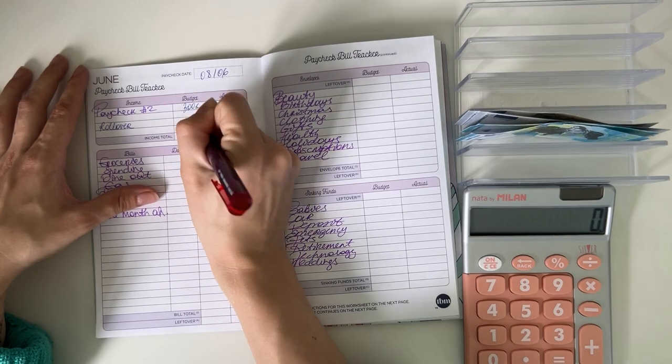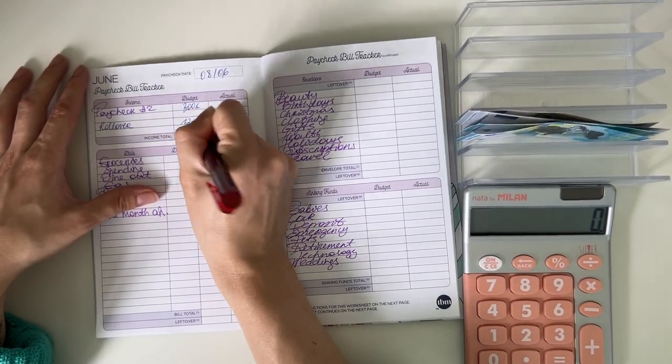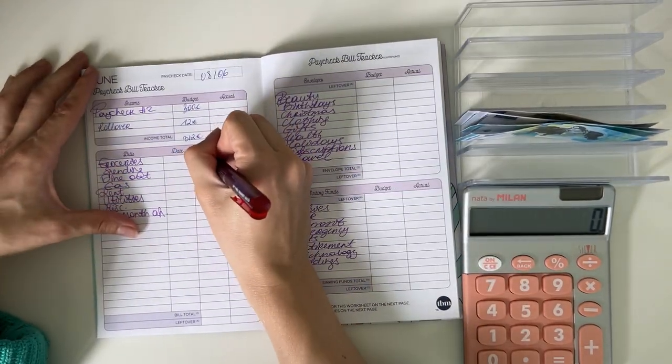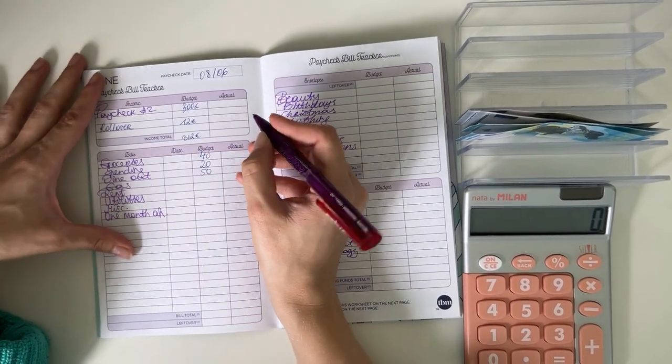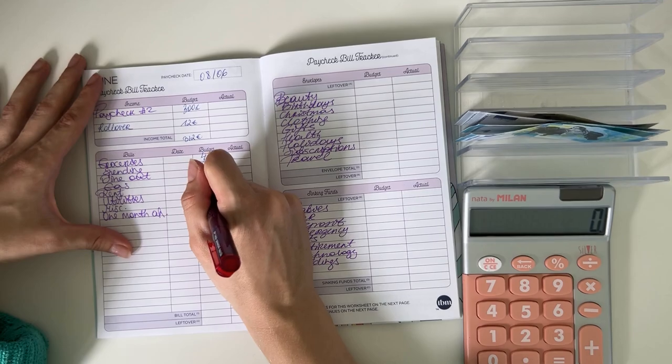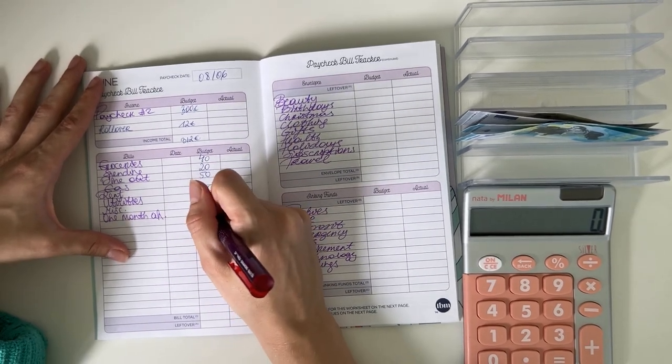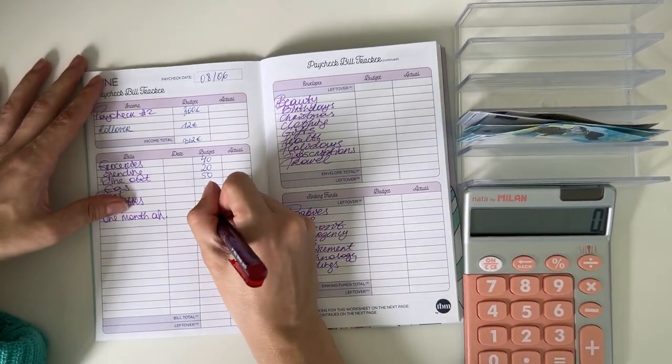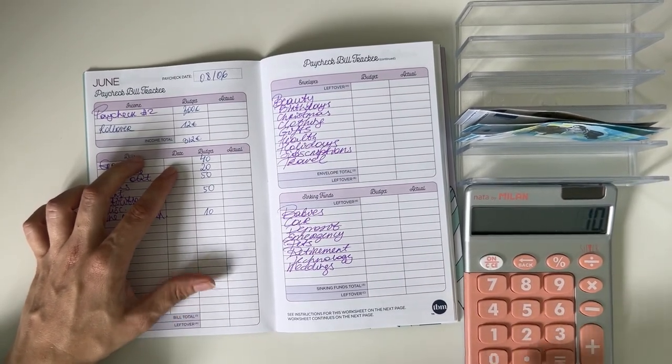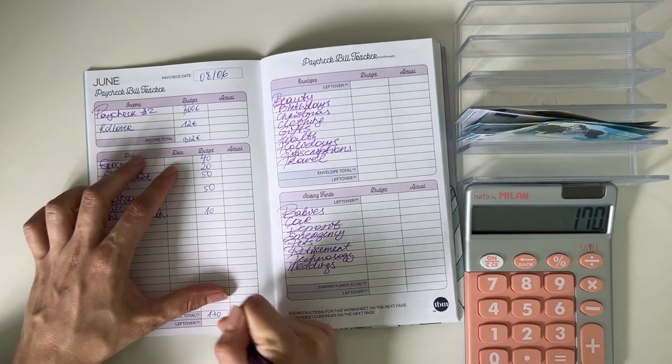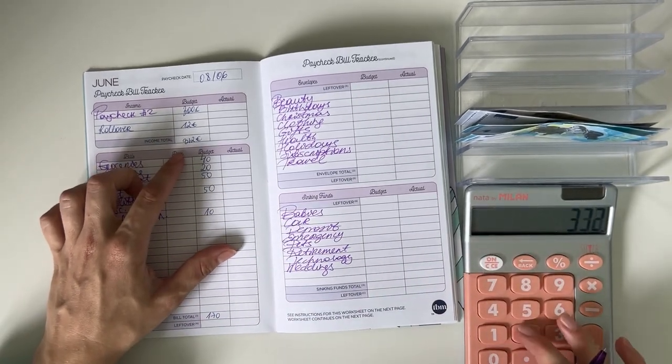So groceries will be getting 40, spending 20, dine out 50, rent will be getting 50, and upkeep or one month ahead will get 10. So in total, 40 plus 20 plus 50 plus 50 plus 10 is 170. So I do have less money to work with than usual.